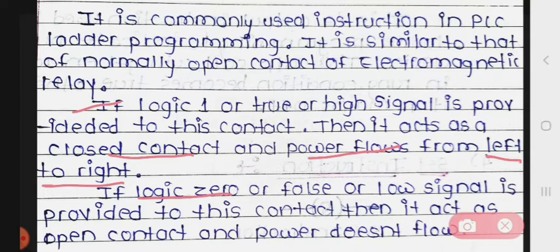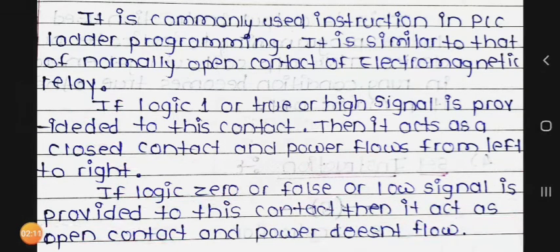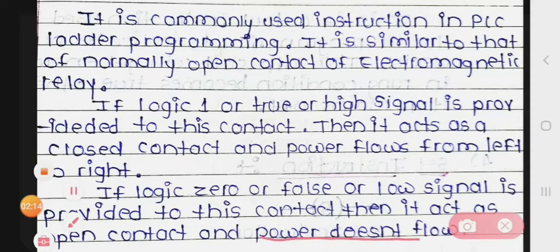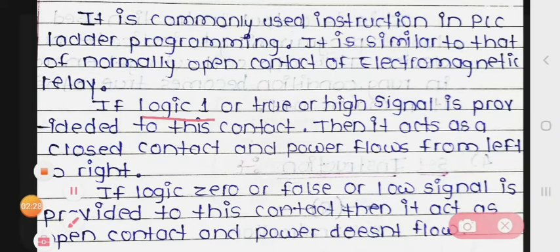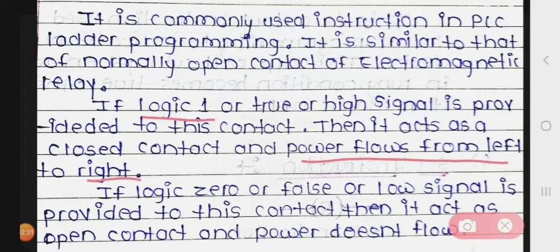And if logic 0, that is false or low signal is given, then the contact acts as an open contact and power does not flow. If logic 1 is given, power flows left to right; if logic 0 is provided, power does not flow and it acts as an open contact.